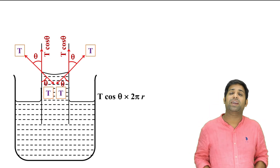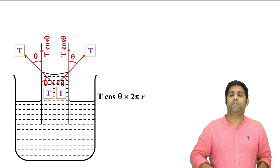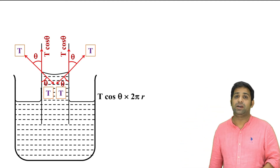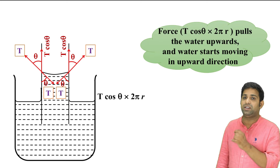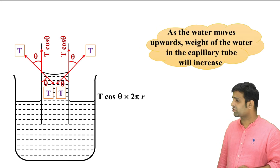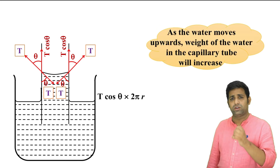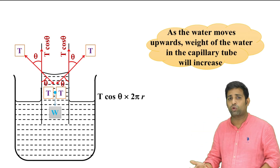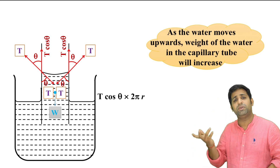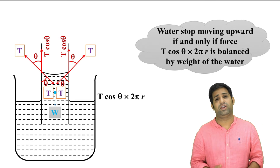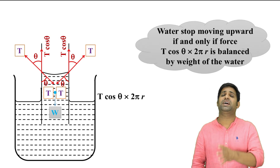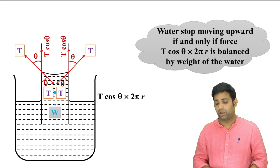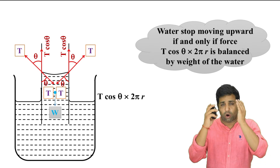The liquid is kept at that point because the downward force — which is the weight of the liquid column — balances the upward force T cos theta. When these two are equal and opposite, the liquid reaches equilibrium and stops moving upward.